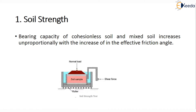The first factor is soil strength. The bearing capacity of cohesionless soil and mixed soil will greatly increase disproportionally with an increase in its effective frictional angle, because they are directly proportional to the frictional angle.